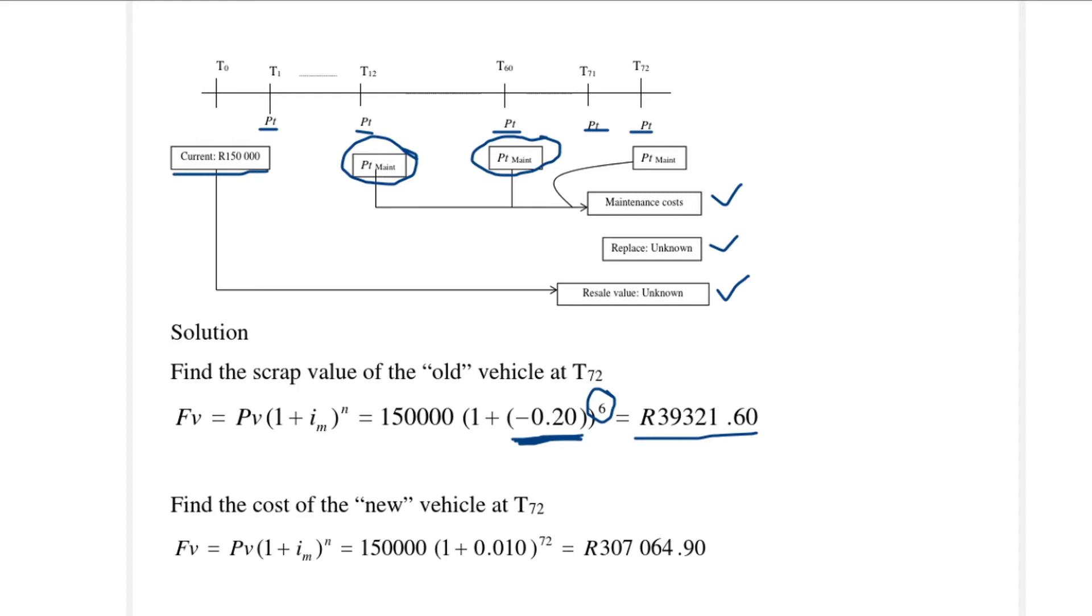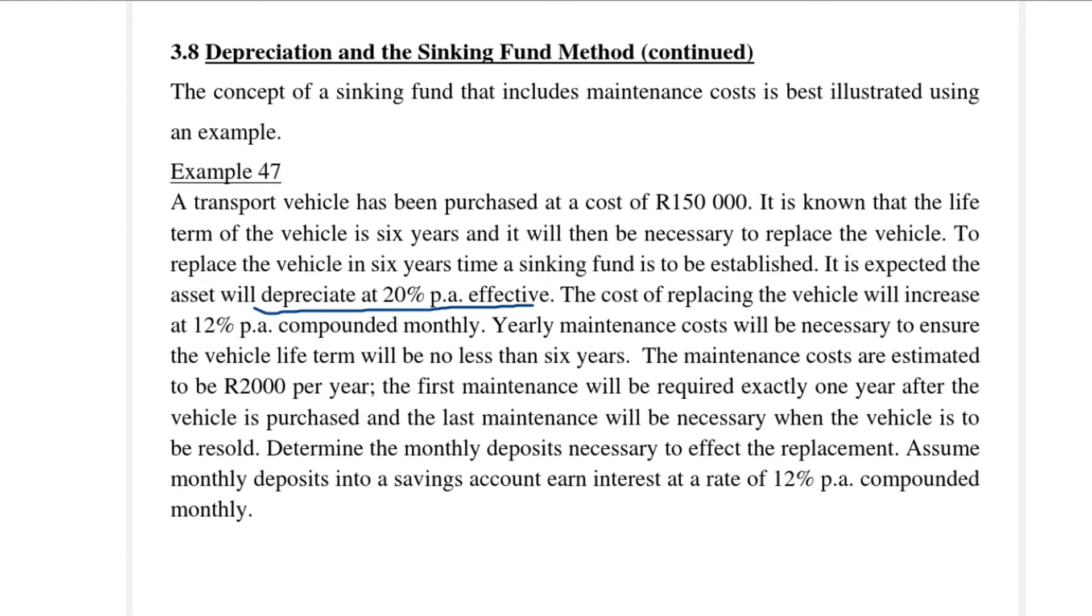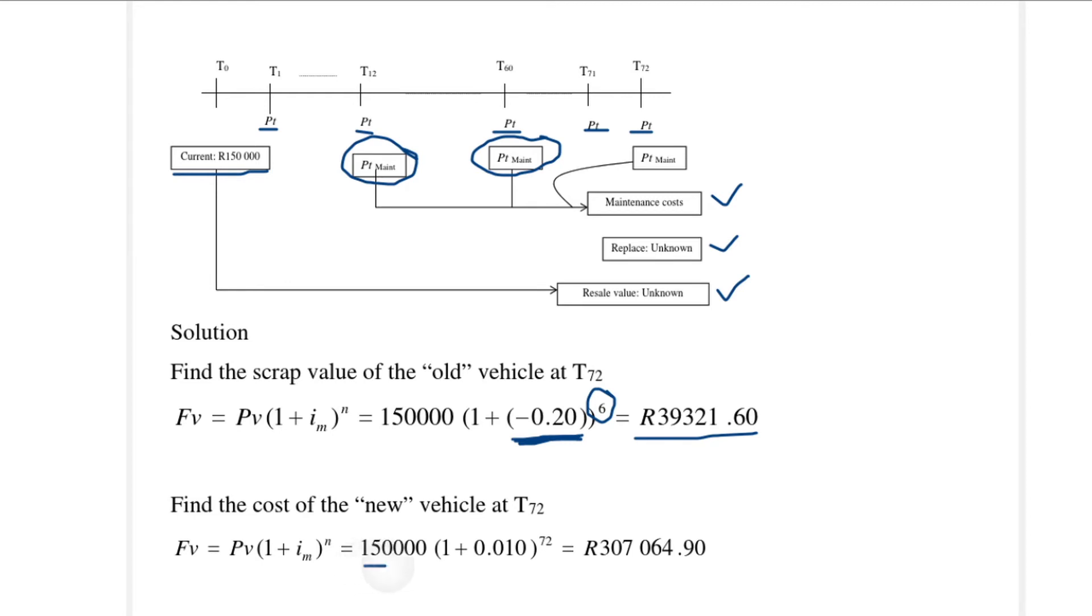Then we also need to find the replacement value, and again we make use of the compound interest formula. The compound interest is 12% per annum compounded monthly, so we start with the current value of 150,000 rands, and rate is 12% per annum compounded monthly, so here we have the effective monthly rate and we have 12 times 6, that is 72 months. So the replacement cost is 307,000 rands, and then we have to find the maintenance cost.